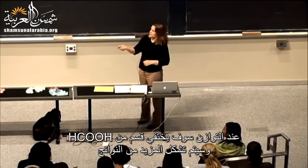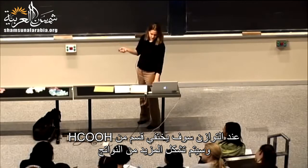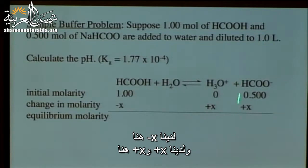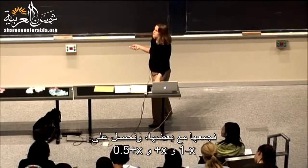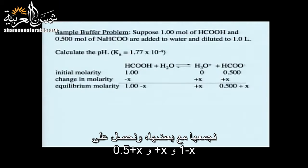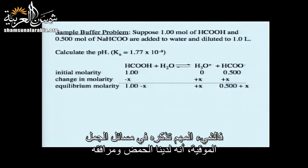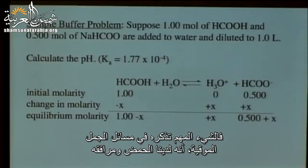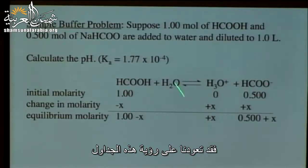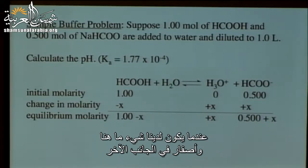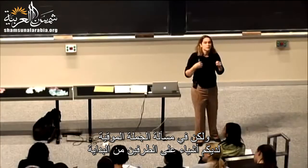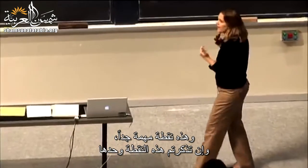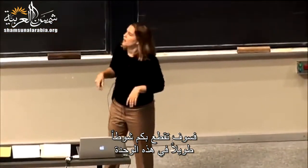At equilibrium, some acid reacts and more products are formed, so we have minus x for the acid and plus x for hydronium and conjugate base. Adding it all together gives us (0.1 − x), x, and (0.5 + x). The important thing to remember in buffering problems is that you have both the acid and the conjugate base present from the very beginning — unlike problems where only one side starts with a value. If you remember that, you'll go a long way through this unit.